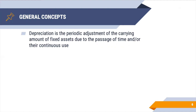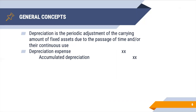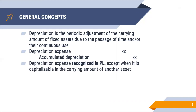So what are the general concepts of depreciation? First, it is defined as the periodic adjustment of carrying amount of fixed assets due to the passage of time and/or their continuous use. Every time you record depreciation, you debit depreciation expense and you credit a contra-asset account called accumulated depreciation. Take note that the depreciation expense is recognized in profit or loss, except when that depreciation expense is capitalizable in the carrying amount of another asset. For example, the depreciation expense of a machinery used in the production of your goods is capitalizable as part of your inventory and not recognized in profit or loss. Other than that, all depreciation will be recognized in profit or loss.